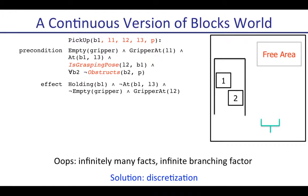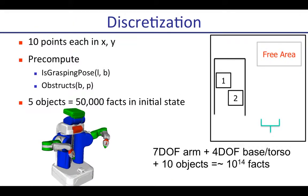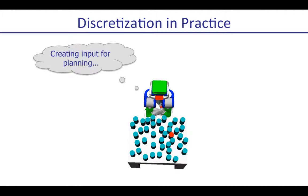There's a standard way to deal with that: discretization. If we have 10 points each in X and Y and five objects, to just specify the initial state in that discretization we'd have to express about 50,000 facts — and that's a very small problem. If we extend the same ideas to the PR2, we end up having to write down about 10 to the 14 facts for just 10 objects. So for a test domain where we need to pick up a red object, we'd be stuck just at the stage of creating input for the planning problem. But there is a way to use task planners.